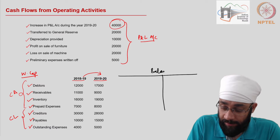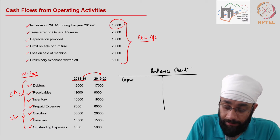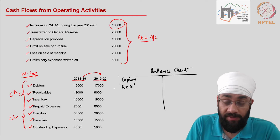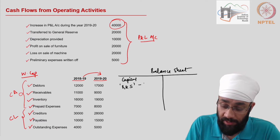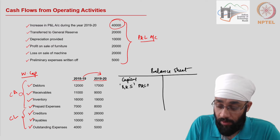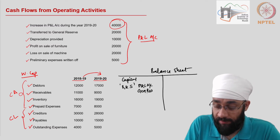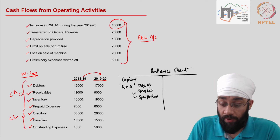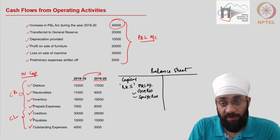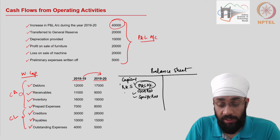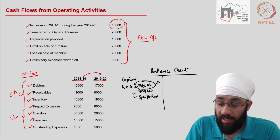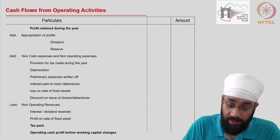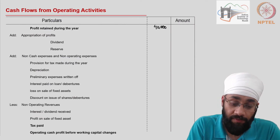In the balance sheet you have share capital and reserves and surpluses — these are the shareholders' funds. Reserves and surpluses can have different specific reserves in it; one of those reserves is called the profit and loss account, and you can also have a general reserve. After transferring and distributing all the profit to various stakeholders, whatever is left is retained in the business. This retention is shown in the profit and loss account, and the increase in that balance — the retained earnings during the year — is what we use here. That figure is 40,000.